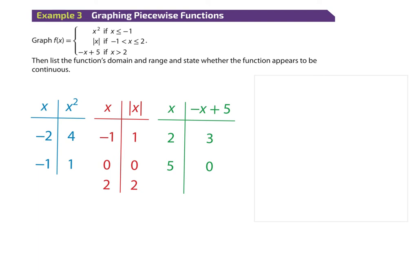With piecewise functions, you could come down the parabola and jump over to the V — it doesn't have to keep going. The step function jumped, after all. The reason you plug in those border numbers, even though they're only part of one piece, is to see if they give the same value. If negative one gives the same result in both the parabola piece and the absolute value piece, the function continues smoothly — you don't pick up your pencil.